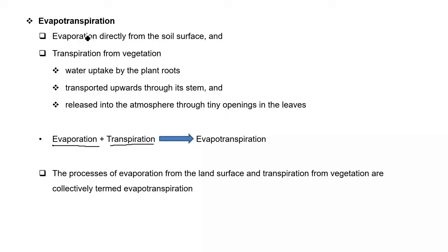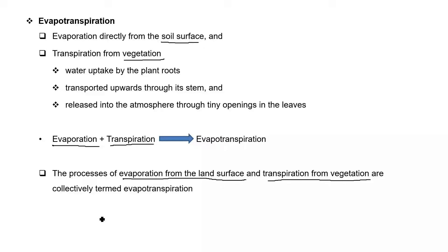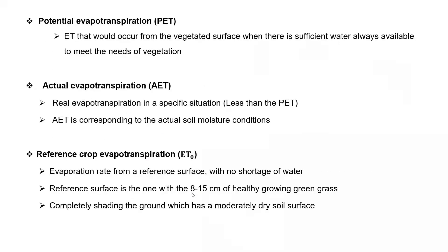Evapotranspiration is the combination of two words: evaporation and transpiration. Evaporation is evaporation directly from the soil surface, whereas transpiration occurs through vegetation. The processes of evaporation from the land surface are collectively termed evapotranspiration.